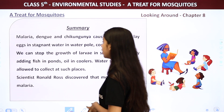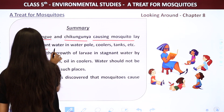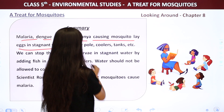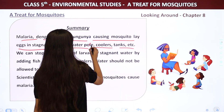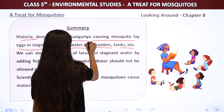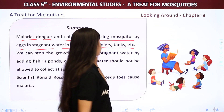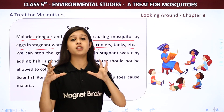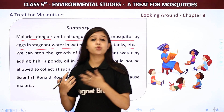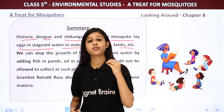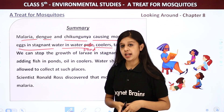Malaria, dengue, and chikungunya-causing mosquitoes lay eggs in stagnant water — in water pools, coolers, tanks, etc. So if water is collected in ponds, coolers, and tanks, we can suffer from malaria, dengue, and chikungunya.